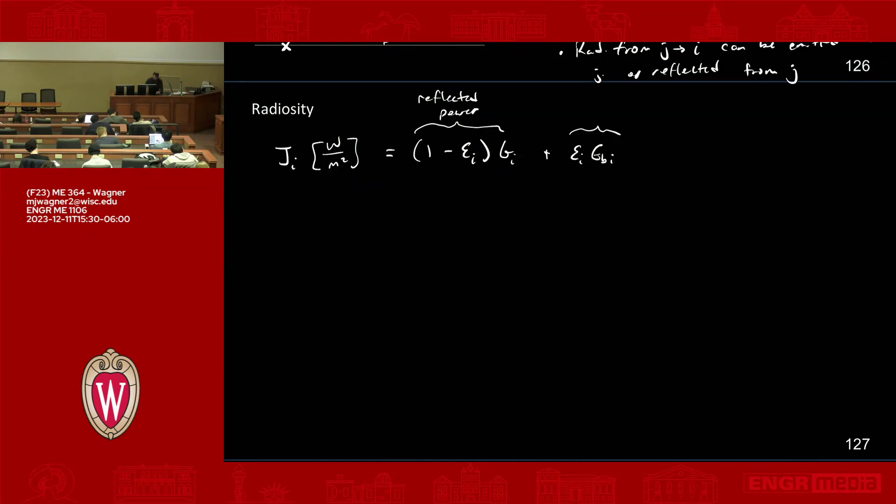So let's label this. This term here, this first one, is reflected power. The second term here is emitted power. We have emissivity, G I is the irradiation, and this E B I is black body emissive power.